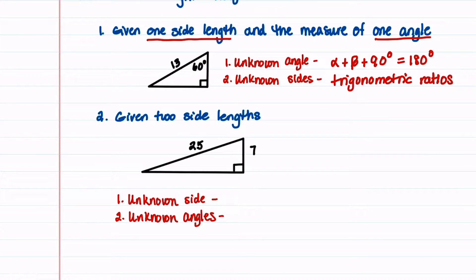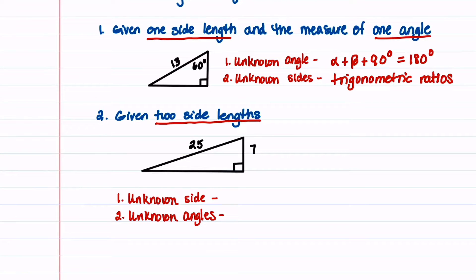The second common triangle we're asked to solve is one where we're given two side lengths. To find the unknown side, we use the Pythagorean theorem: one side squared plus another side squared equals the hypotenuse squared. To find the unknown angles, we use trigonometric ratios.